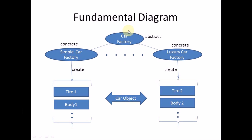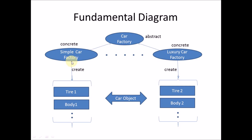As you can see, this is a car factory — this is an abstract factory — and these two are concrete factories. These two factories will be responsible for creating the related objects. The simple car factory will create Tire 1 and Body 1, related to that particular factory. The second factory creates Tire 2 and Body 2 — a whole different series of objects — but the object types themselves are the same.